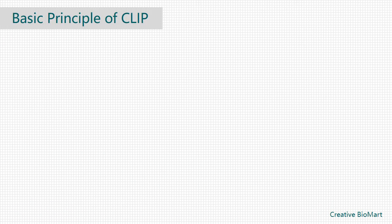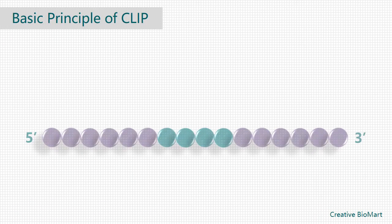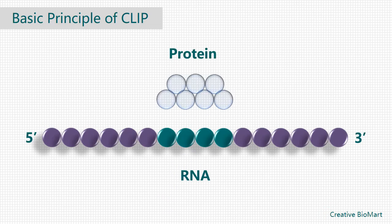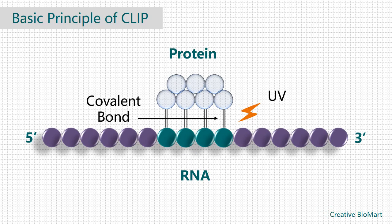Basic Principle of CLIP. Upon exposure to ultraviolet light, covalent bonds are formed between proximal proteins and RNA. These bonds only occur at the sites of direct contact, and preserve RNA-protein interactions.